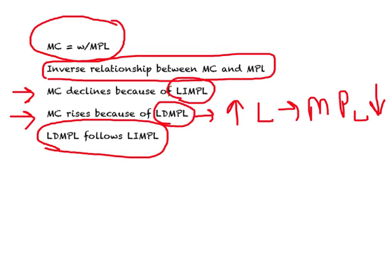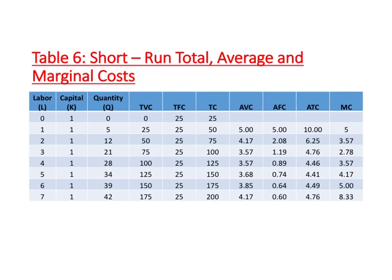Remember, productivity and the relevant costs are always inversely related to one another. This is one of the reasons why firms emphasize productivity increases — simply because they want to bring down the average or the marginal cost of production.